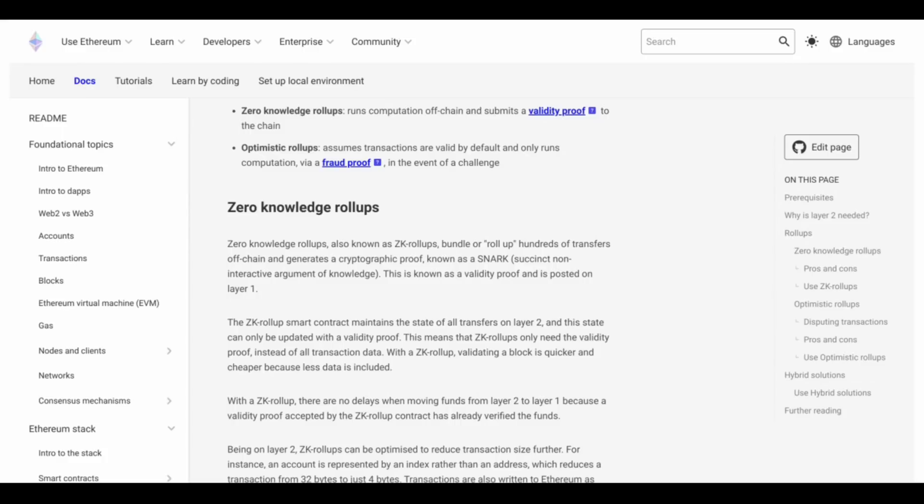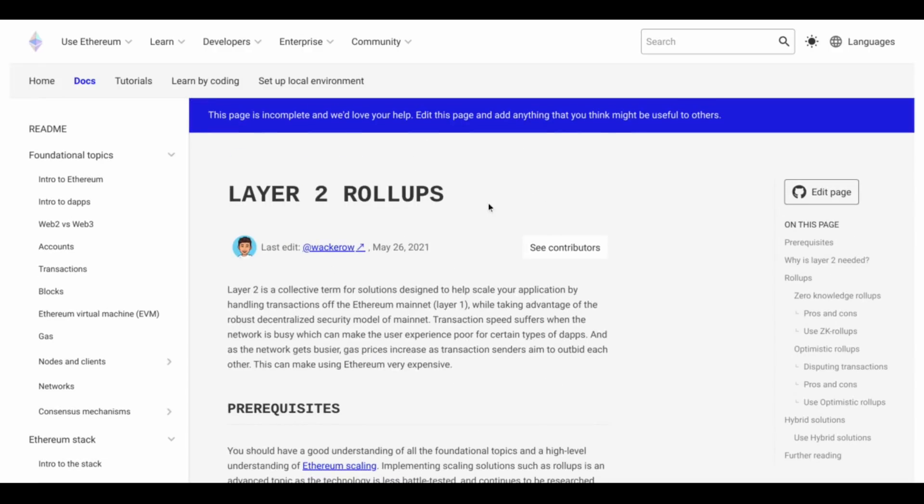So you run a bunch of transactions off chain, and then you represent those on chain with a zero knowledge proof. So makes sense. We know this is going to work. This is established cryptography. But the question is, sure, any crypto project these days, any modern Gen 3 crypto project is going to have layer two available to them. But why isn't Ethereum pursuing layer one as well,